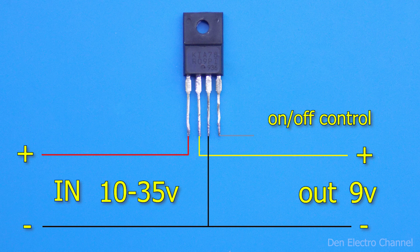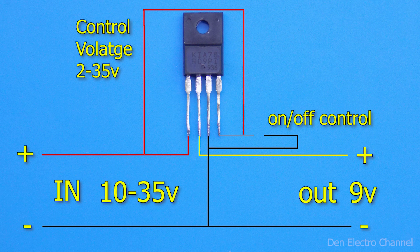To disable the microcircuit, you need to apply a minus signal to the fourth pin. After this, the output voltage will disappear. Then, in order for the microcircuit to work again, you need to disconnect the minus and connect the plus with a voltage of 2 to 35 volts.